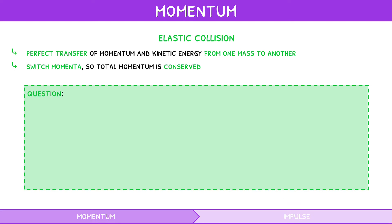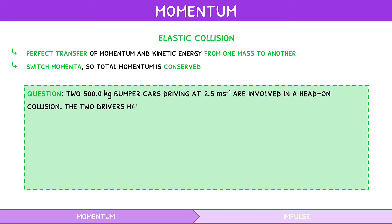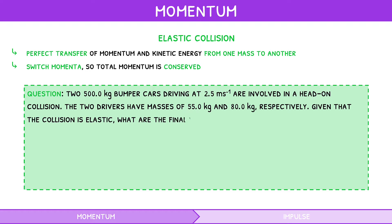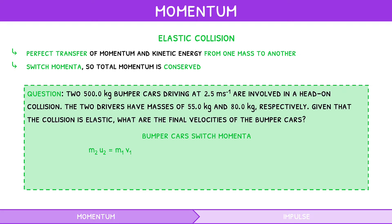Let's look at an example question. Two 500kg bumper cars driving at 2.5 m/s are involved in a head-on collision. The two drivers have masses of 55 and 80kg respectively. Given that the collision is elastic, what are the final velocities of the bumper cars? As this is an elastic collision, the two bumper cars switch momenta. We adapt the formula to give mass 2 times initial velocity 2 equals mass 1 times final velocity 1, and mass 1 times initial velocity 1 equals mass 2 times final velocity 2. Rearranging gives velocities of 2.6 m/s and 2.4 m/s.